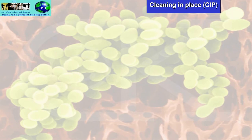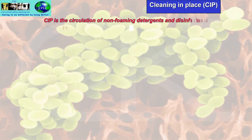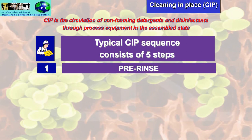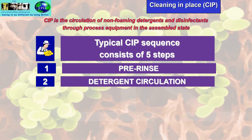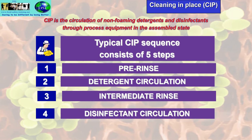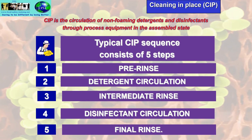CIP stands for Cleaning in Place. This is where you can't take equipment apart for cleaning because it's part of a larger system — used in large breweries, dairies, and soft drink manufacturers with massive containers, silos, and tubing that's almost impossible to dismantle. The definition of CIP is the circulation of non-foaming detergents and disinfectants through process equipment in the assembled state. A typical CIP sequence has five steps: pre-rinse, detergent circulation, intermediate rinse, disinfectant circulation, and final rinse.